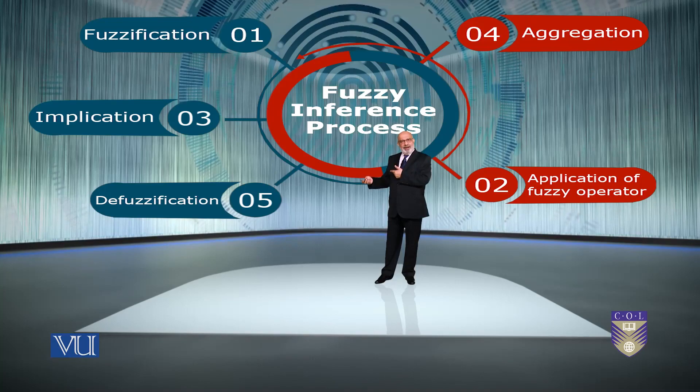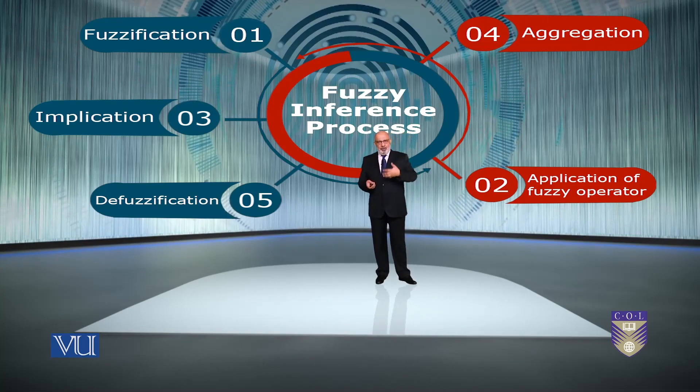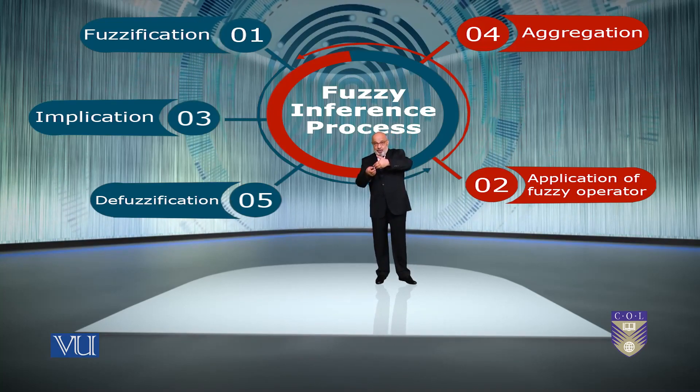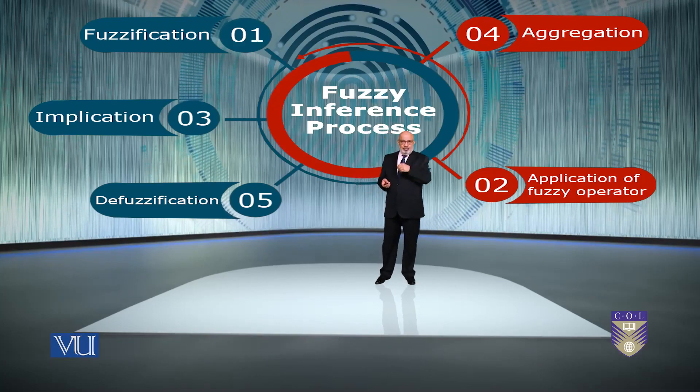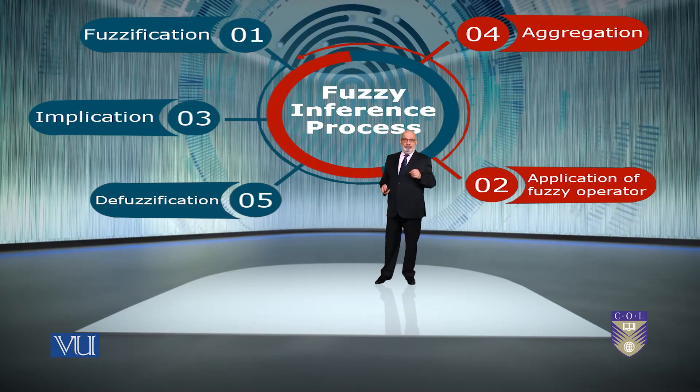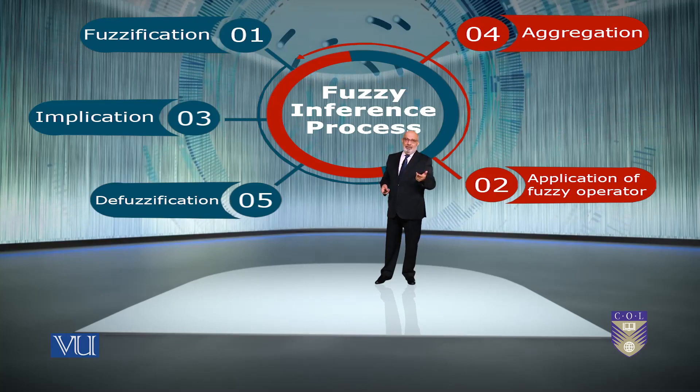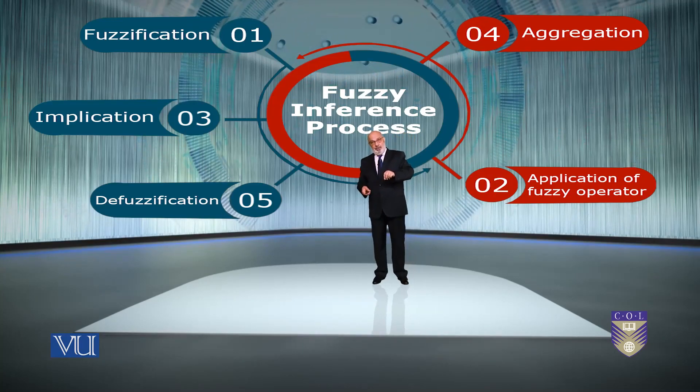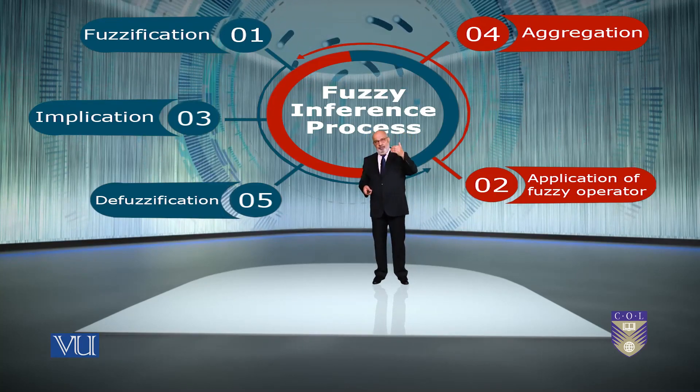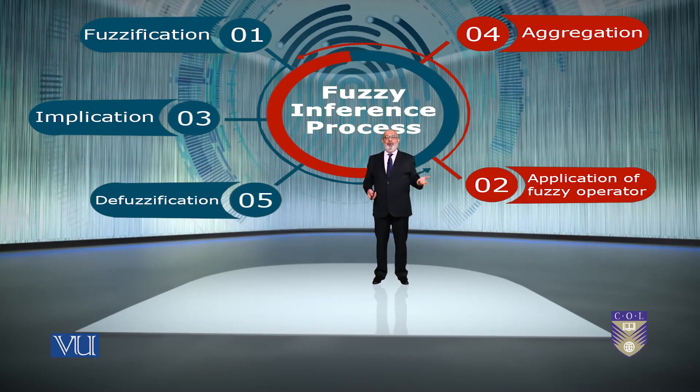Then the aggregation of consequences if there are multiple rules. There's only one rule, you go ahead. If you have multiple rules that can be applied, you aggregate them, put them together. And then once you've got a fuzzy value out of this, you defuzzify the output. So once you have a defuzzified output, that's what you're looking for.